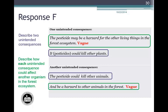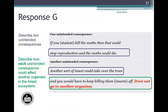Student Response G: First unintended consequence — 'stop reproduction and the moths could die' — is plausible, but no description of the effect on another organism is provided. Second unintended consequence — 'another sort of insect could take over the trees' — is plausible, but the attempted effect description — 'you would have to keep killing them off' — does not describe the effect on another organism and is not creditable. Response G earns a total of zero points.